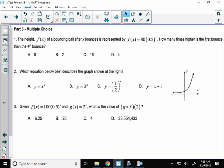Alright, here's part 3 of our test review. These are all multiple choice questions. The first one says the height f(x) of a bouncing ball after x bounces is represented by f(x) equals 80 times 0.5 to the x. How many times higher is the first bounce than the fourth bounce?